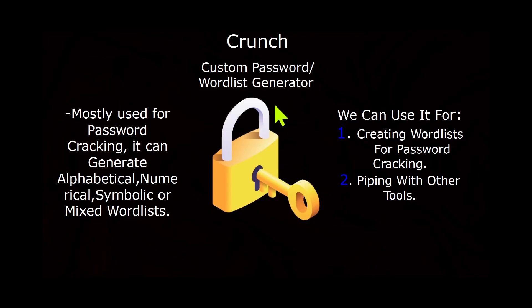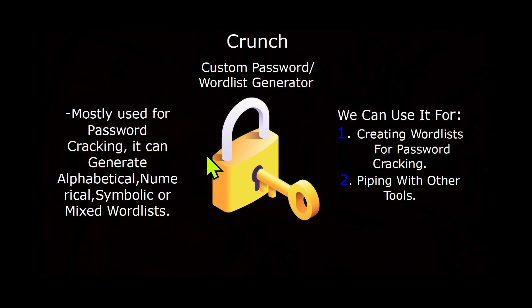Today I'm going to explain what the tool Crunch is used for. Crunch is a custom password wordlist generating tool which can be used on different systems. It's mostly used for cracking passwords and it can generate alphabetical, numerical, or symbolic mixed word lists. We can use it for creating word lists and cracking hashes or encrypted files.